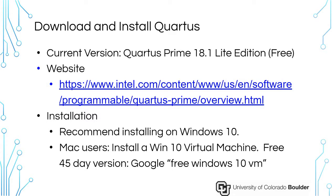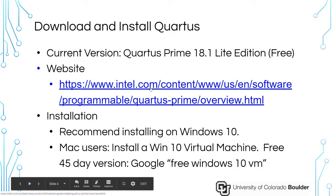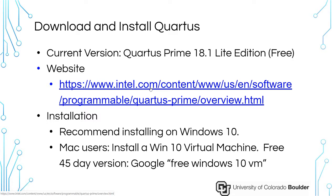Let's walk through downloading and installing Quartus. We're going to use Quartus Prime 18.1 Light Edition, which is free. We're going to install this on Windows 10. If you're a Mac user, I recommend you use a virtual machine of Windows 10, which you can find a free version that will last long enough for our class. There are also Linux versions which you're welcome to try, but you might run into more compatibility problems, so it might be a little more difficult.